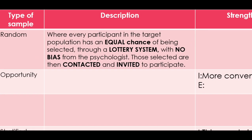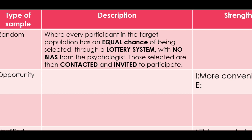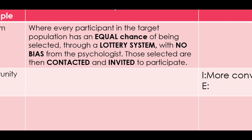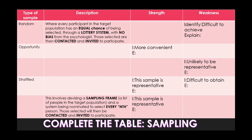The first technique is a random sample — the most favoured of all researchers but not often used. Every participant is given an equal chance, and we use lottery systems, normally computerised, whereby you select random names or random numbers. There is absolutely no bias — you're not picking specific types of people or approaching any specific type of person; every single person is equally as likely to be selected. Remember, once you've randomly selected those people, you then have to contact them and invite them to participate.